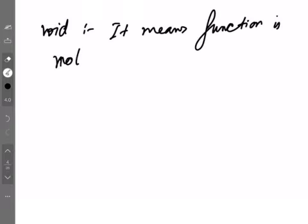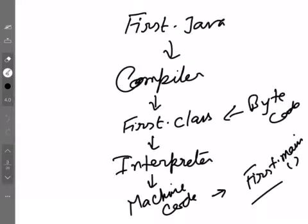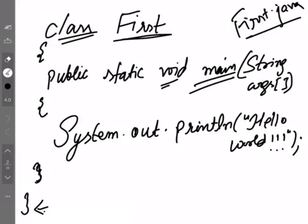When a function does not return anything, we write void. If the function returns an int, we write int. If it returns a float, we write float. So void means the function is not returning any value. For main, you will always write void — you have no choice.